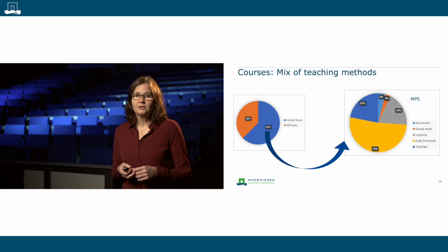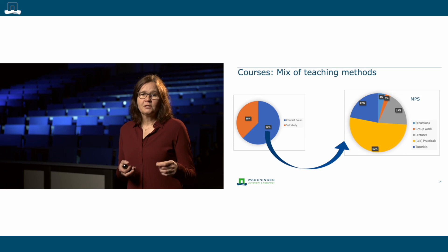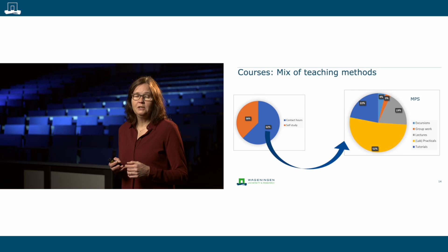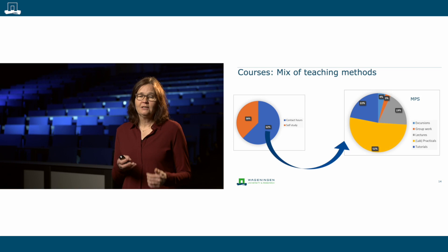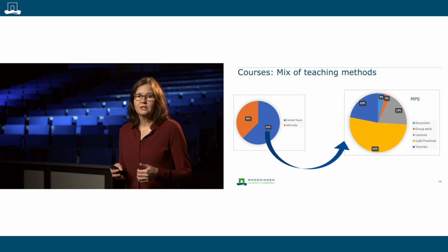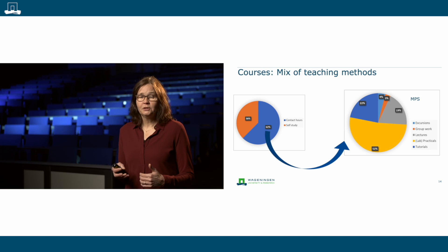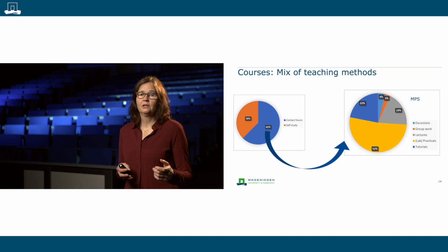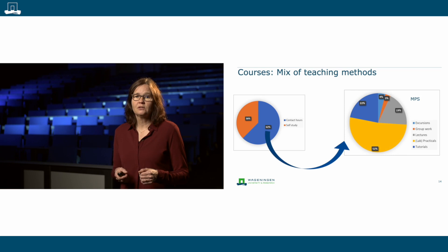The courses in the Master of Plant Sciences involve a mix of teaching methods and also have space for self-study. Roughly one third of the course time is available for self-study, while the other two thirds involve contact hours, either on campus or online. Contact hours offer a mix of teaching methods combining lectures and tutorials to engage with theory, as well as practicals in the lab, greenhouse, or field. Increasingly, computer practicals are also used — for example, to develop crop growth models or to work on bioinformatics with larger data sets.